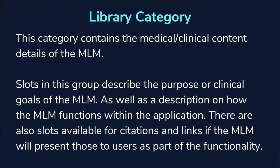The second category is the library category. This category contains the medical and clinical content details of the MLM. It's used to describe the purpose and goals of the MLM, as well as how it's functioning in the application. If you have particular modules, tables, or other elements it's going to be calling, it's very helpful to have this section be as detailed as possible, so that in the future anyone troubleshooting or doing maintenance can understand where the MLM is intended to function, what its purpose is, and who is responsible for it.